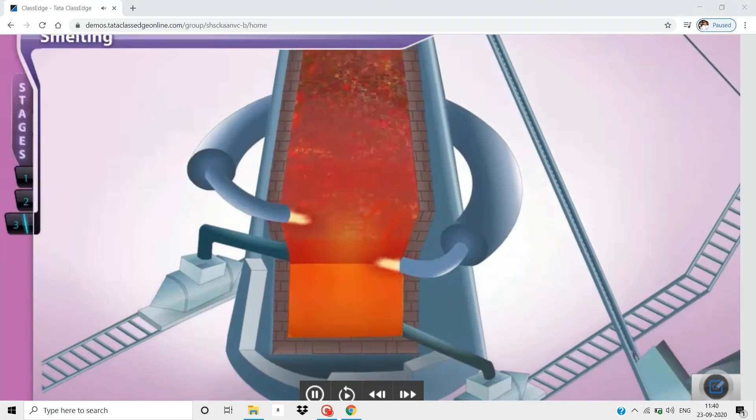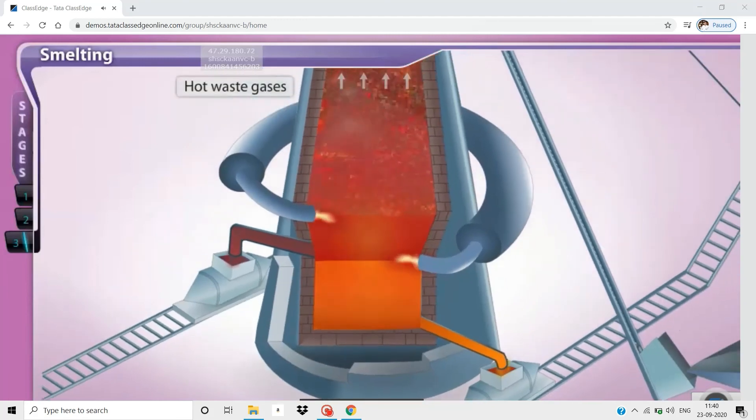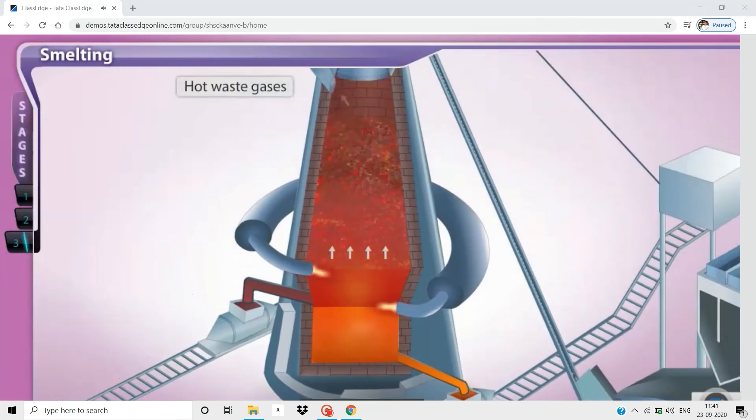The molten slag, being lighter, floats over the molten iron. The slag and iron are then collected from different outlets at the bottom of the furnace. The volatile impurities form hot waste gases and are removed through an outlet at the top of the furnace.